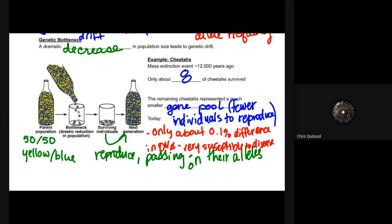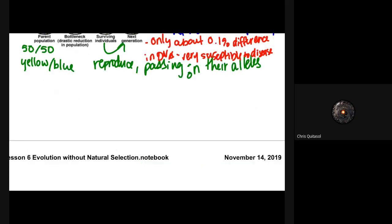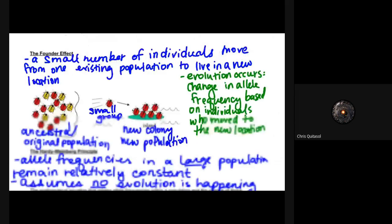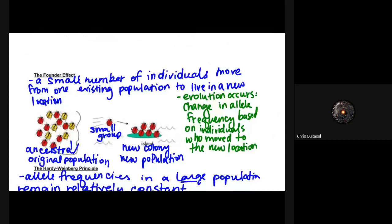Another one that we look at is called the founder effect. We kind of looked at it a little bit with regards to any of the species that lived on the Galapagos Islands when Darwin first made his trip. A small number of existing individuals move from one existing population and live in a new location. The ancestral or original population might have an allele frequency or allele traits that don't match the new colony in the new population.